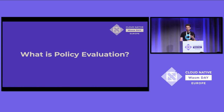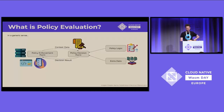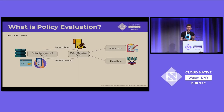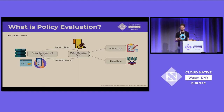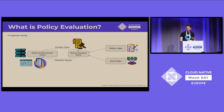We need a way to enforce and evaluate policy logic. I like to think about policy evaluation as having a policy enforcement point — typically a contact point with some user, an application, mobile app, or an API interacted with by an automated service — which provides context and a request to a policy decision point. That policy decision point is loaded with policy logic and perhaps some extra data, and it returns a decision result to the policy enforcement point.